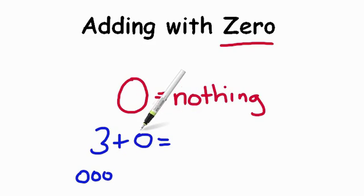One, two, three. So three plus zero equals three. So adding with zero is really exciting. So anything you add to zero, you get the number that you started with. Let's take a look at another.